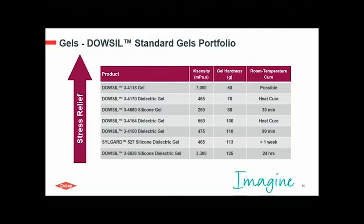This table shows a number of our standard gels. As you can see, most of them provide quite low viscosity. We sort them in terms of hardness, or translated to stress relief level. You can also see their different cure temperatures, so depending on your need and process, you might choose one over another. You will get the slides later on, so we will not talk about each product in detail.